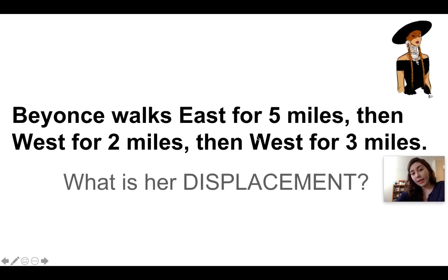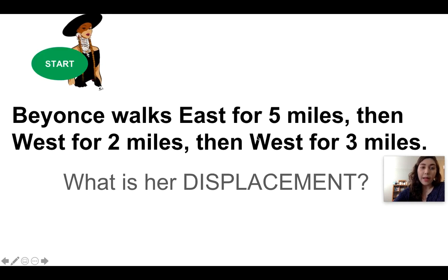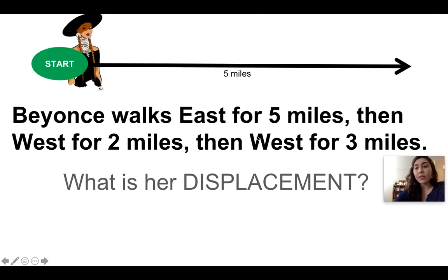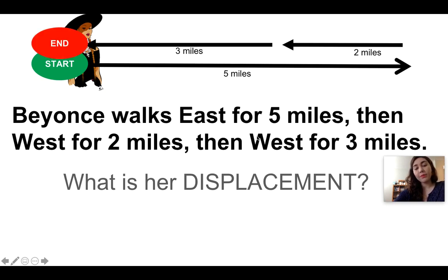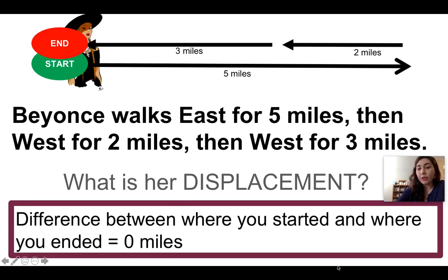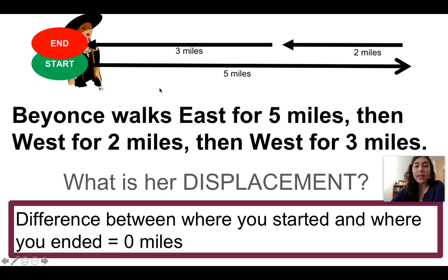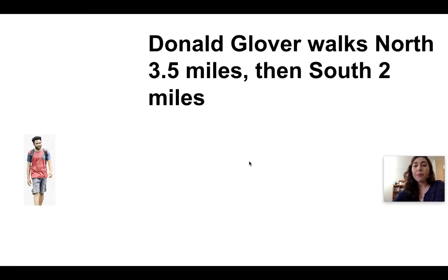Her total distance is ten miles. Her displacement is a different story. She traveled east five miles, west two miles, west three miles, but the displacement is the direct path between where she started and where she ended. She started exactly where she ended, which trips people up — the difference is zero. Anytime you end exactly where you started, displacement is going to be zero.